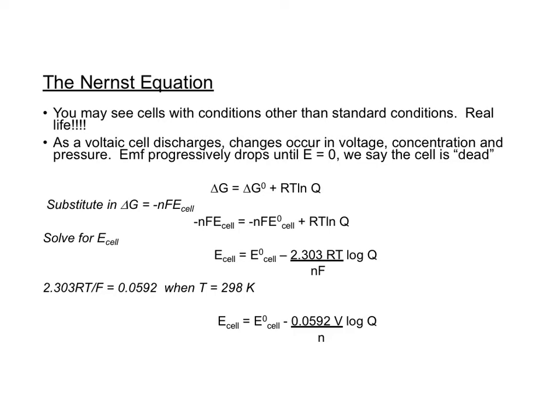As the voltaic cell discharges, we're going to see changes in voltage, concentration, and pressure. It's going to drop eventually until the E makes it all to zero and then we will say the cell is dead. Kind of like your cell phone when the battery runs down. So where does the Nernst equation come from?